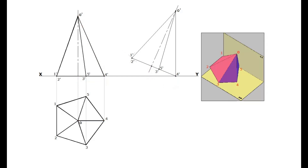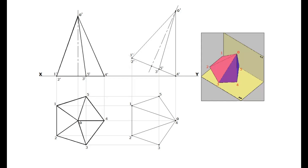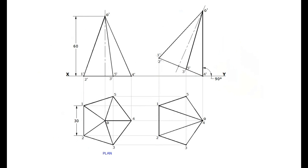Now, to draw the final plan, project all the base corners and apex point below the XY line. Project the base points and apex point from the first stage plan also. Here the apex point O dash and base corner 4 dash are on the same projectors. Mark the other corresponding points of intersection. Draw all the base edges and all the slant edges also. Slant edge 5 O will be coinciding with base edge 5-4. Slant edge 3 O will be coinciding with base edge 3-4. Thus the projection of the pentagonal pyramid resting with its base corner on the ground and slant edge perpendicular to the ground are drawn.